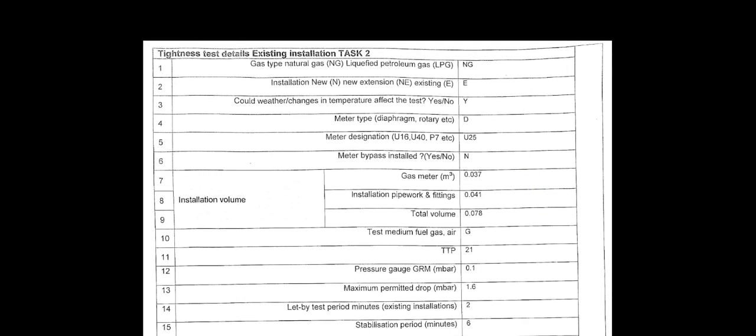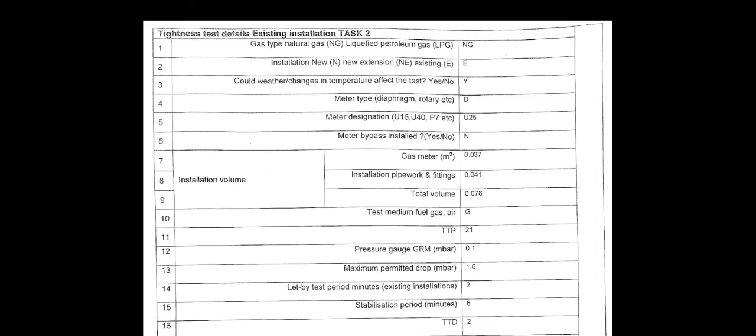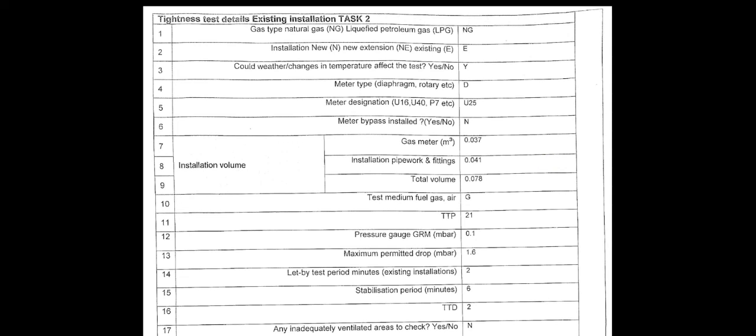Here is another example of a tightness test carried out. Gas type: natural gas (NG). Installation: E for existing. Could weather or temperature changes affect the test? Yes. Meter type: diaphragm meter. U25 meter designation — that's the type of meter. Meter bypass installed: no. There's the gas meter, the size.